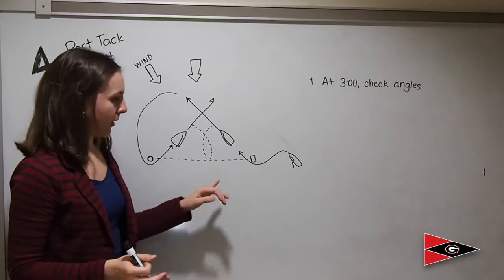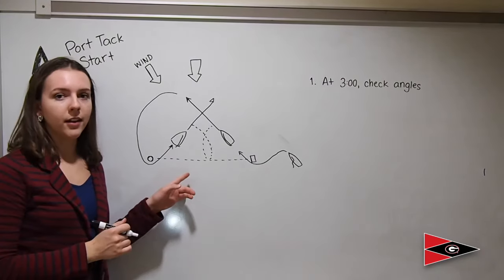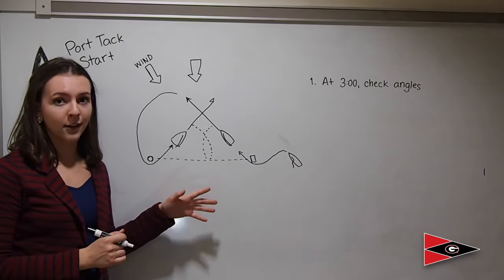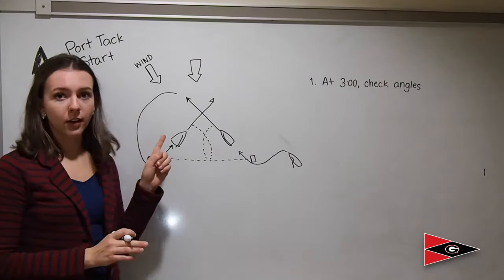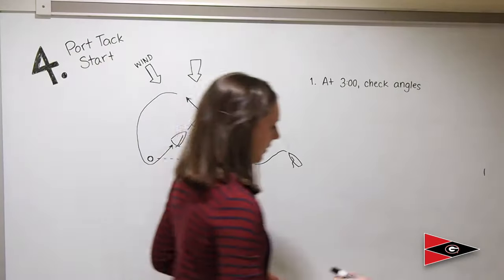If both angles are relatively even, then I know that the wind is pretty centered and I don't have to adjust anything. I should probably start on starboard tack because I'm going to get eaten alive if I start on port. But if the port tack angle happens to be significantly larger than the starboard tack angle, that's when I know that the wind has shifted off to the left and the port tack is now favored for the start.